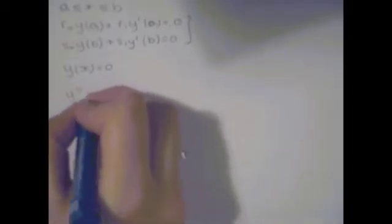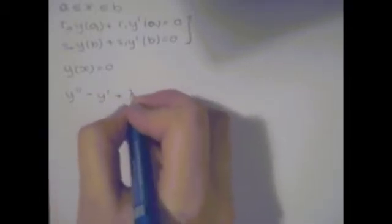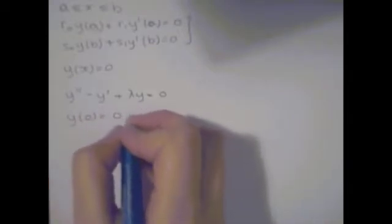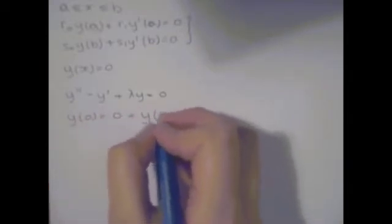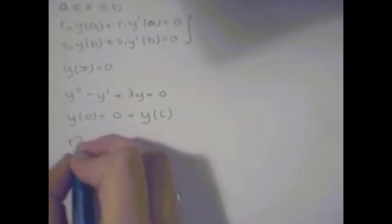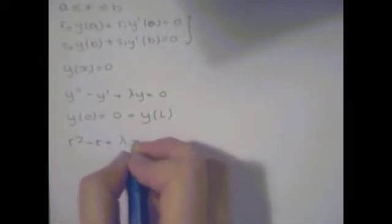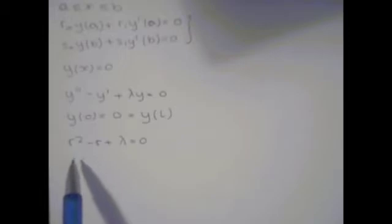Looking at the example of finding the eigenvalues and eigenfunctions of y'' - y' + λy = 0, with the conditions y(0) = 0 = y(L) where L is a constant value. The first thing we need to do is look at the auxiliary equation, which is r² - r + λ = 0, and as you can see the coefficients match up between this equation and the auxiliary equation.